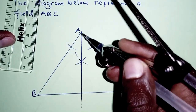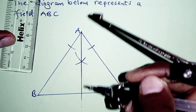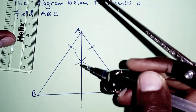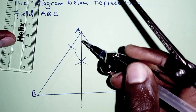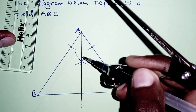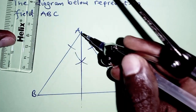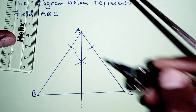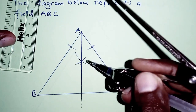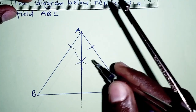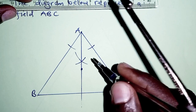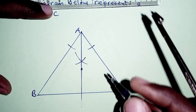This line here is the locus of points equidistant from AB and AC. So that is for part A.